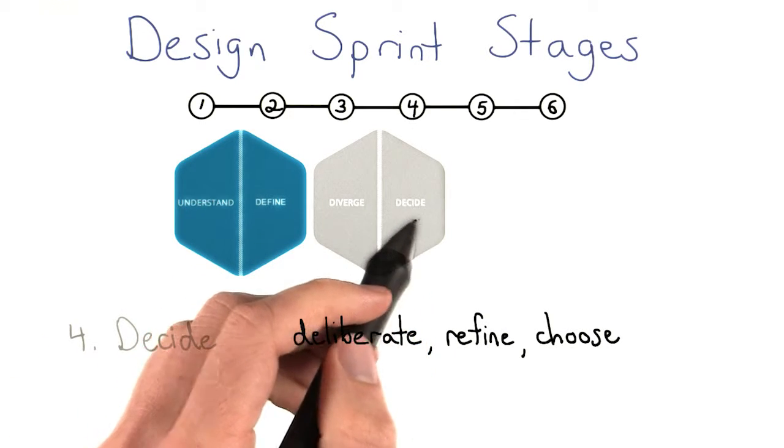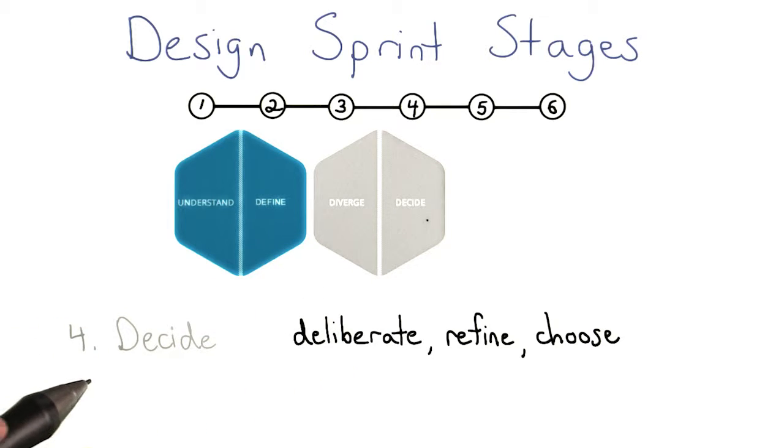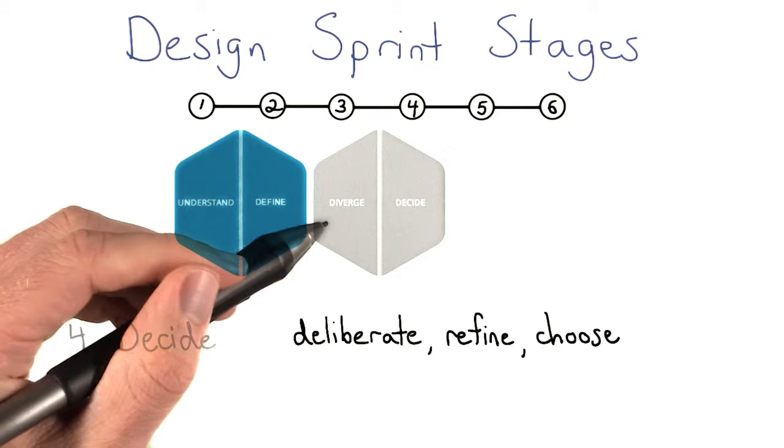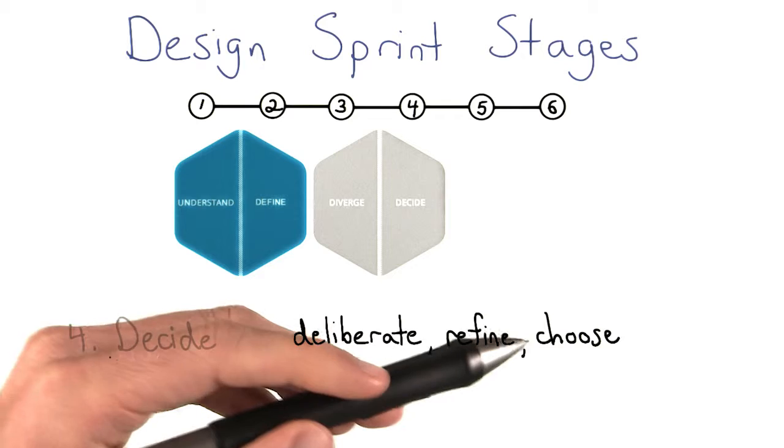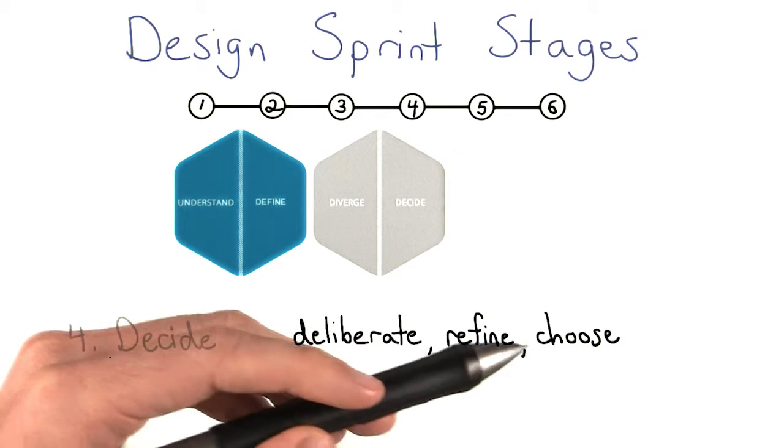The fourth stage is the decide stage. And in this stage, you really just want to deliberate about the ideas that you came up with in the previous diverge stage, refine those, and then choose the best one, or some combination of the ideas, so that way you get the best possible product.